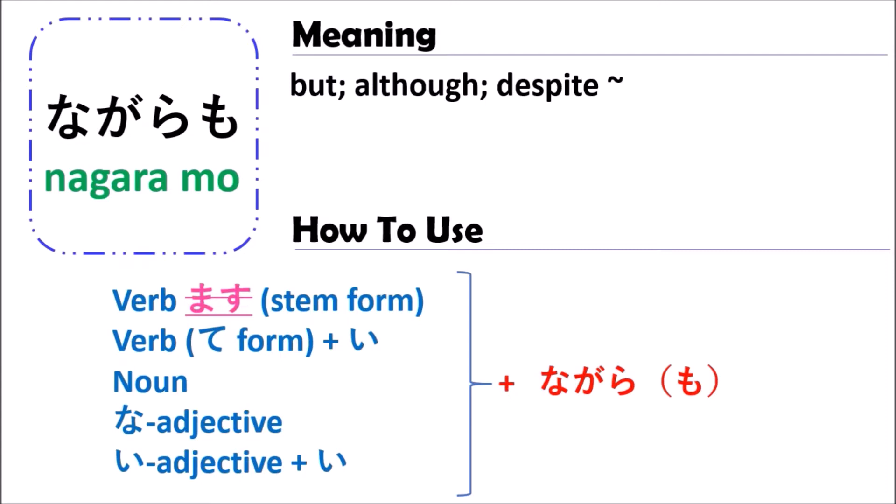For the noun, you don't change anything — you can use it in that form, followed by nangaramo. For adjectives, you can use it with both na-adjectives and i-adjectives. Nothing changes for either type, and after that you follow by nangaramo.